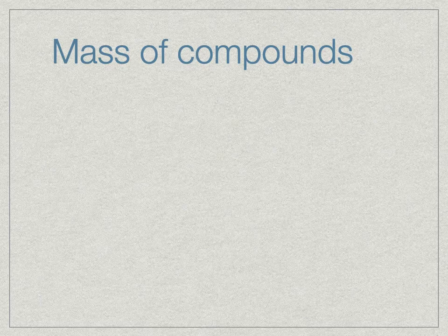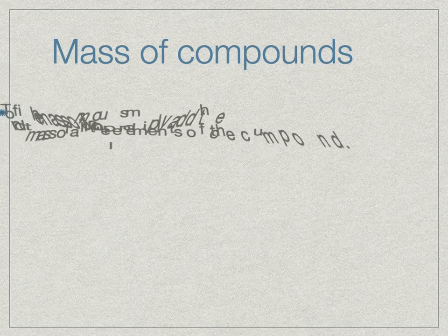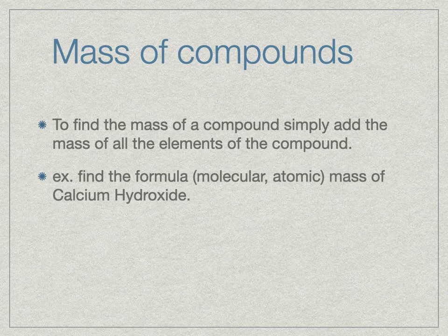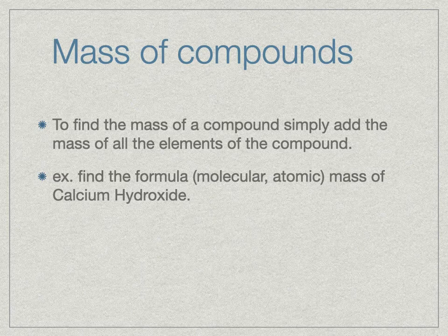What happens if we want to find the mass of a compound? It's a pretty straightforward process. You need to know its chemical formula, and once you have that, you can just add up all of the elements in the compound. We call it a formula mass because the representative particle is a formula unit. If it were a covalent compound we'd call it the molecular mass; if it was an element we'd call it the atomic mass.